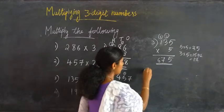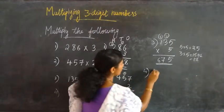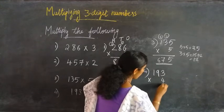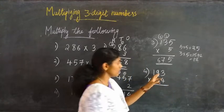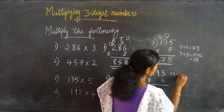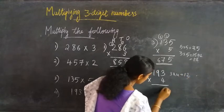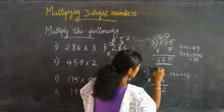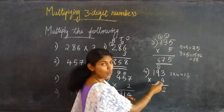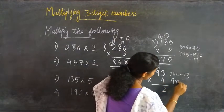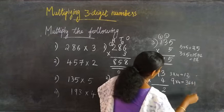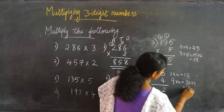Then the 4th question: 193 into 4. First, 3 into 4 equal to 12. Writing 2 here and 1 is carried over. Then 9 into 4 equal to 36, plus 1 is equal to 37.